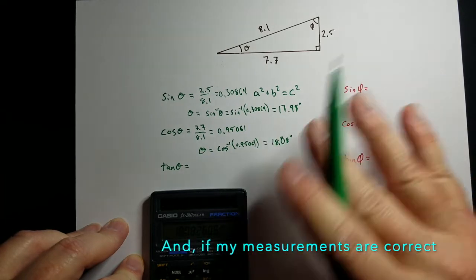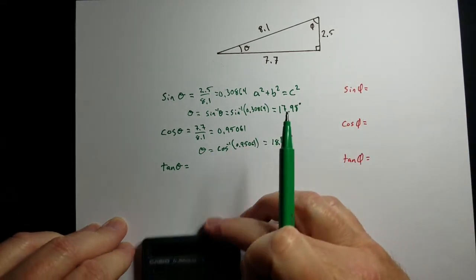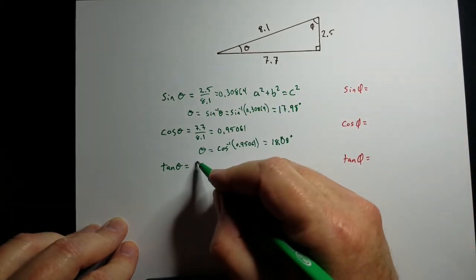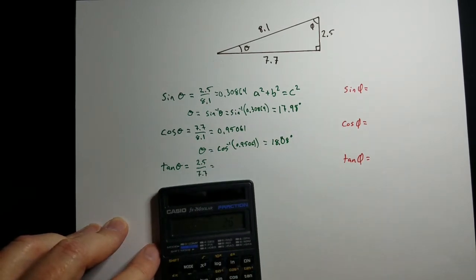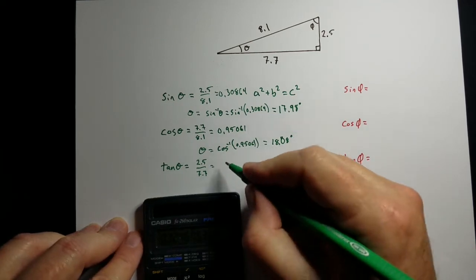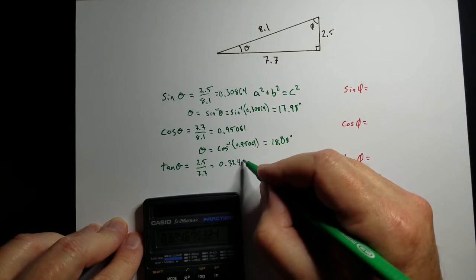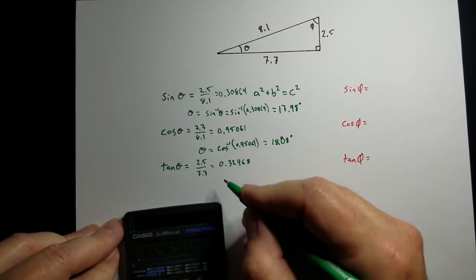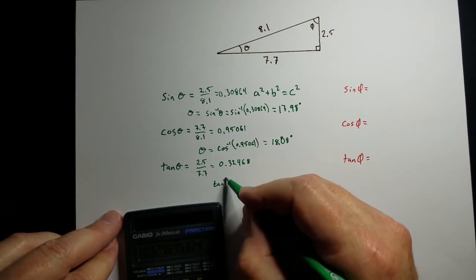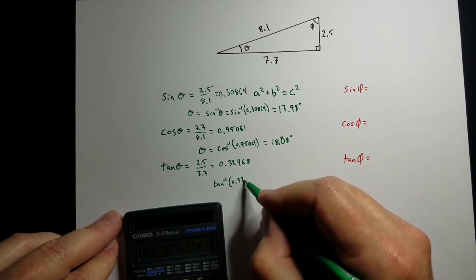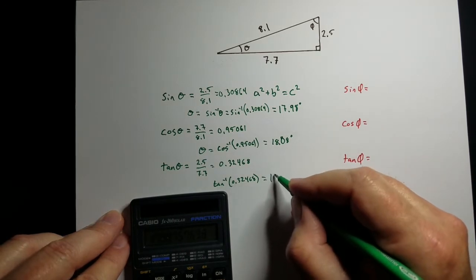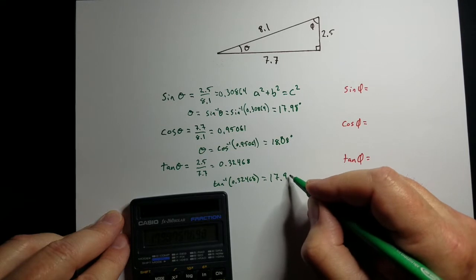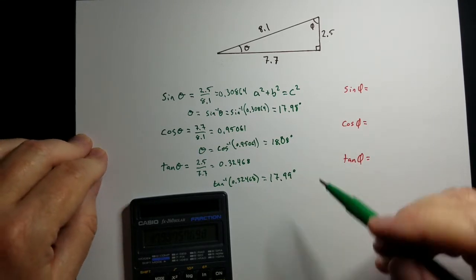There is a little difference there, but mostly because I've rounded off. If I kept the full number in, they should be the exact same number. Let's look for tangent now. Tangent is opposite over adjacent, so that's 2.5 over 7.7. So 2.5 divided by 7.7 gives me 0.32468. If we do the arc tangent of that, 0.32468, shift tangent, we get 17.99 if I round up to stay consistent. So they all hit about the same thing.